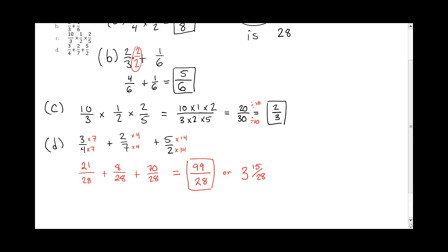So, 3 and 15 twenty-eighths. But I prefer this form, the first form I have there in the box. Because that's an improper fraction. And it just works better mathematically when you're doing other things.